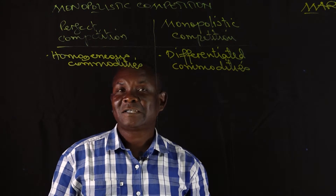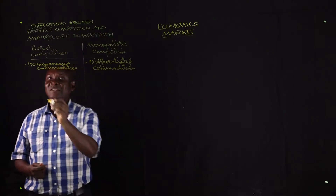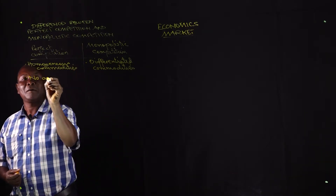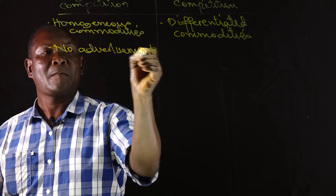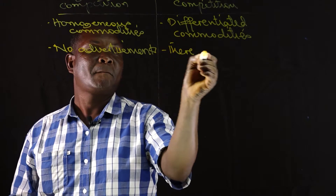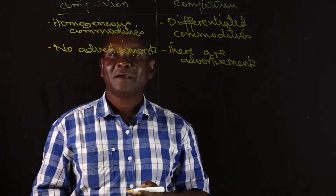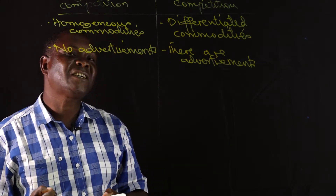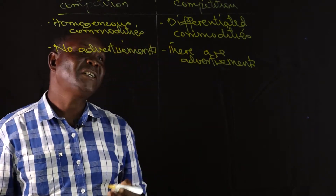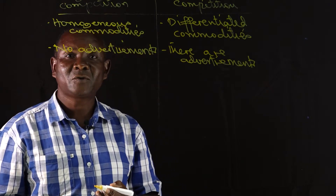The monopolistic competitive firms supply goods and commodities which have close substitutes. Under perfect competition, there are no selling costs and no advertisements. While under monopolistic competition, there are advertisements. We don't need to advertise under perfect competition because commodities are similar and there is a constant price. But under monopolistic competition, the survival of the firm depends on its ability to advertise so as to get customers.